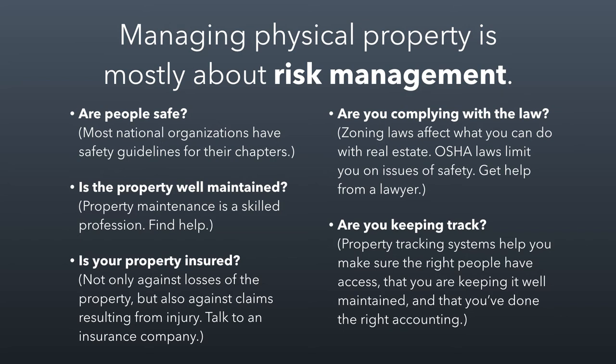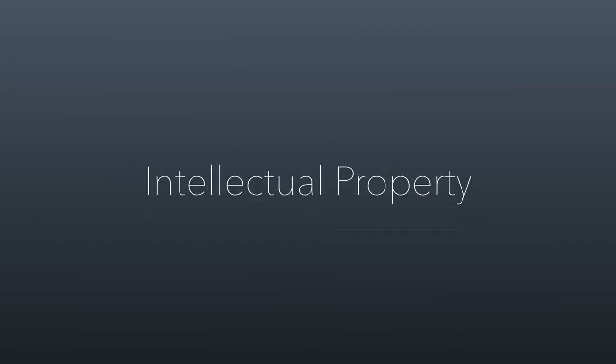Remember, this all just boils down to risk management — making sure you're managing all the risks of physical property effectively. Now let's move on to talk about intellectual property. Intellectual property is property found in ideas, words, names, or inventions. It's not physically tangible, but it still has a pretty robust economic value. There are four different kinds of intellectual property I want to talk about.